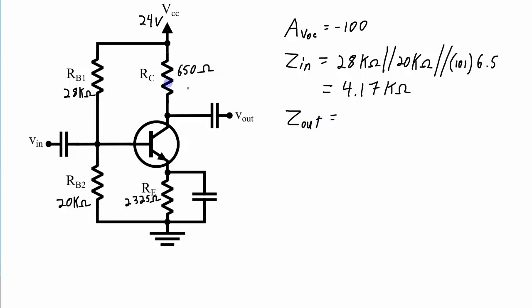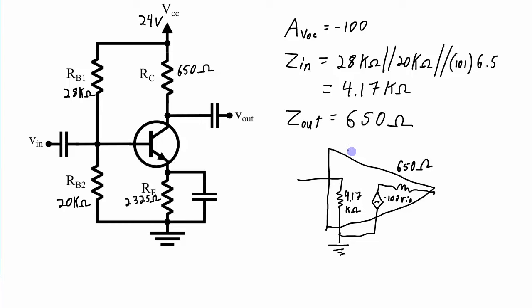The output impedance of a common emitter amplifier is simply the RC value, so that's 650 ohms. So what this gives me if I was translating this amplifier into a general amplifier model, I'll have an input impedance of 4.17 kilo ohms, I have an open circuit voltage gain here of 100 times VIN connected to an output impedance of 650 ohms. So that's the general amplifier model of my common emitter amplifier that I've just designed.